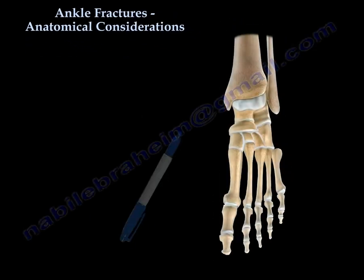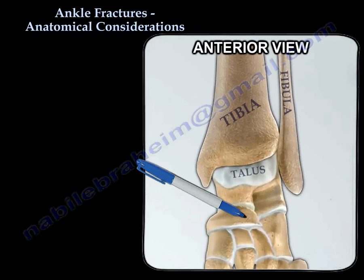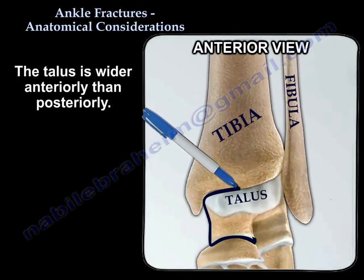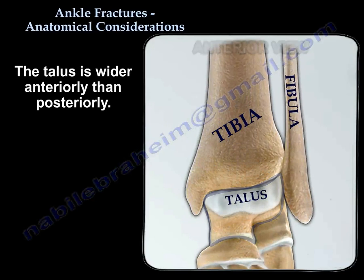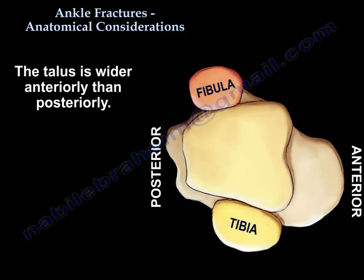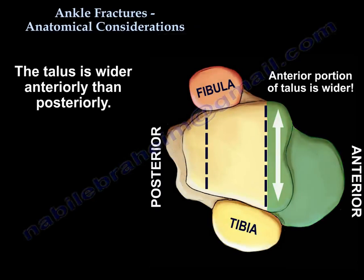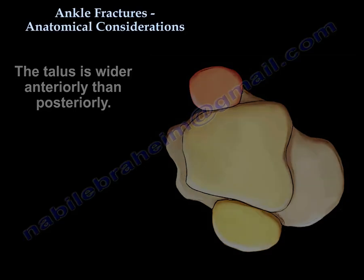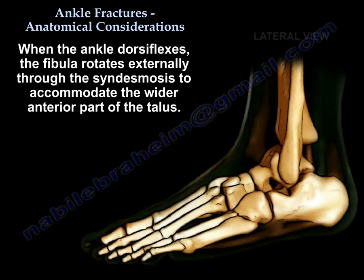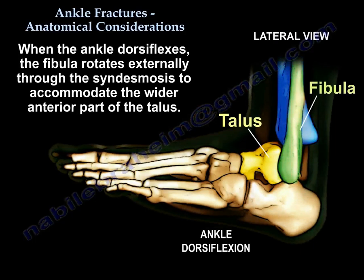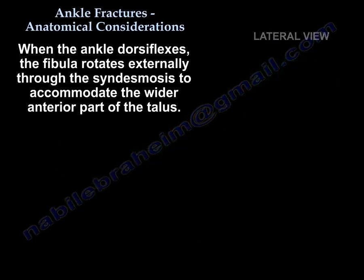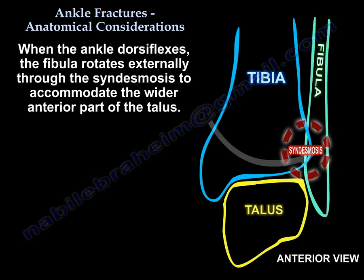The talus is wider anteriorly than posteriorly. When the ankle dorsiflexes, the fibula rotates externally through the syndesmosis to accommodate the wider anterior part of the talus.